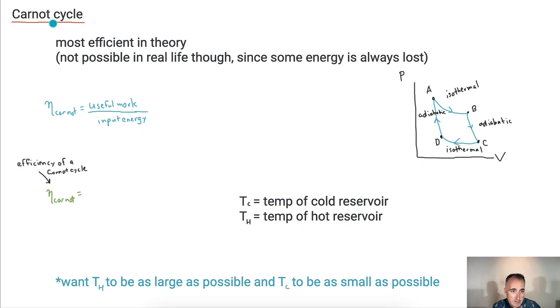So now as we keep going, then let's look at what's a Carnot cycle. A Carnot cycle is the most efficient theoretical heat engine. Now, it's not possible in real life, though, because there's always some energy loss, but this is how a Carnot cycle goes. From A to B, it's going to start off with an isothermal expansion, then adiabatic expansion, then isothermal compression, and then an adiabatic compression to go back. And it goes A, B, C, D, A, B, C, D, and so on.